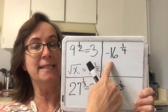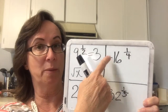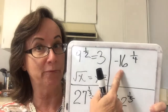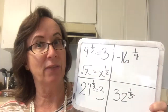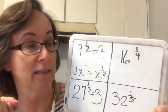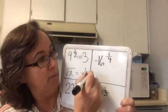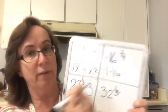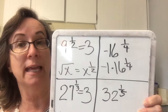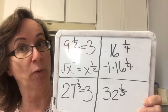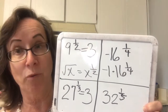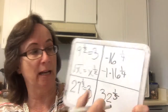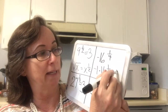Notice this negative is on the outside. Remember the exponent applies only to the number or the variable right before it. Unless the negative is in parentheses, it is not included. So this is the same thing as negative 1 times 16 to the 1/4. 16 to the 1/4 is 2 because 2 to the fourth power is 16. So negative 1 times 2 gives an answer of negative 2.